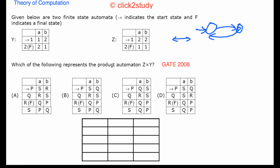The question asks which of the following is the product automaton of Z and Y. To find the product automaton, you run both automata simultaneously — you map transitions on both of them at the same time. When you are at the starting state of one, you are also at the starting state of the other. On reading a symbol, you see where each goes and combine them into one state.